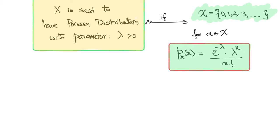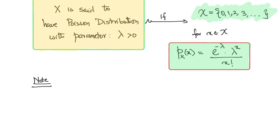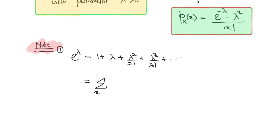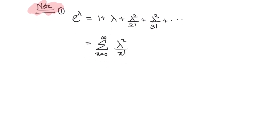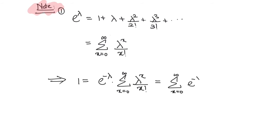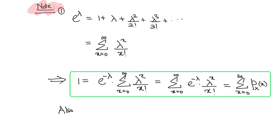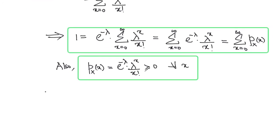The first thing we would want to check is that this is in fact a valid PMF. This follows from the fact that e to the lambda has the following infinite series expansion: the sum from x equals 0 to infinity of lambda to the x divided by x factorial. So we can write 1 as e to the minus lambda times that infinite sum, which simplifies to the sum from x equals 0 to infinity of p sub x of x. Also notice that p sub x of x is greater than or equal to 0 for all x, and this tells us that p sub x is a legitimate probability mass function.